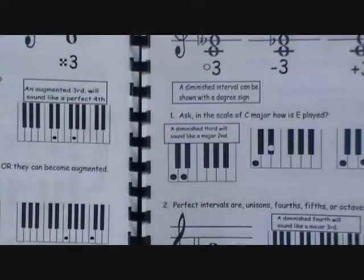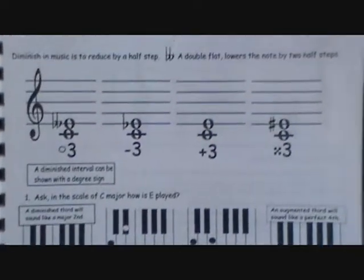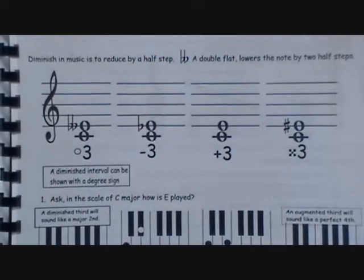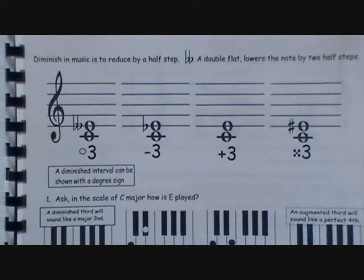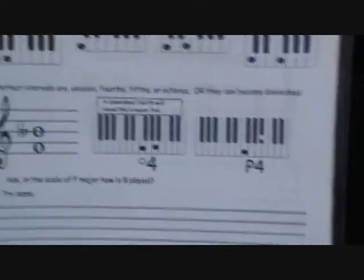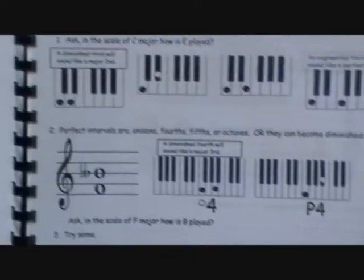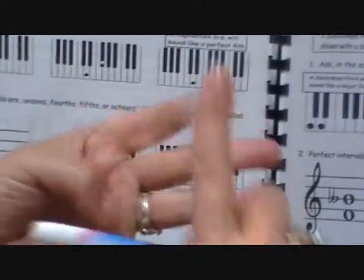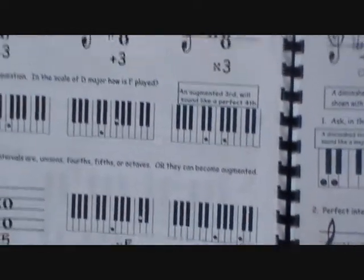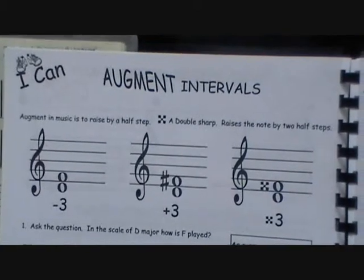The other intervals we're going to be talking about are augmented and diminished intervals. With the perfect intervals we just talked about, they can either become diminished or augmented, never minor or major. So remember, perfect intervals, which are our ones, our fourths, our fifths, and our eighths, can only become augmented or diminished, never minors or majors.